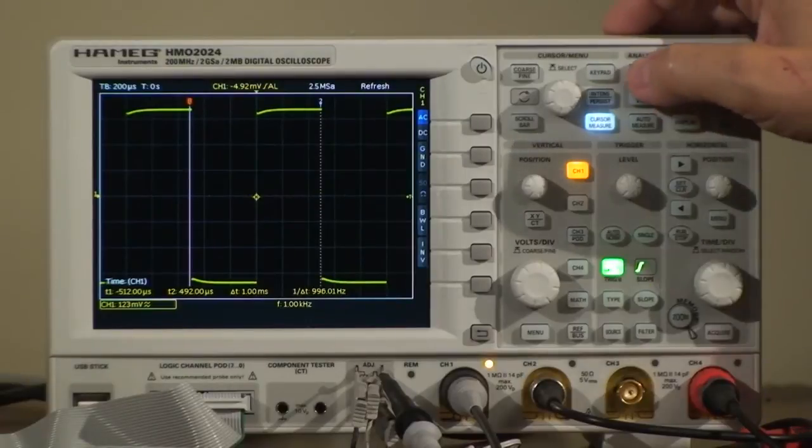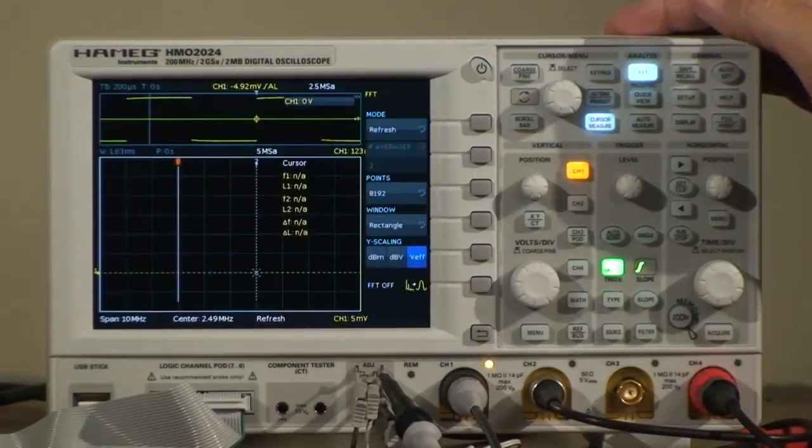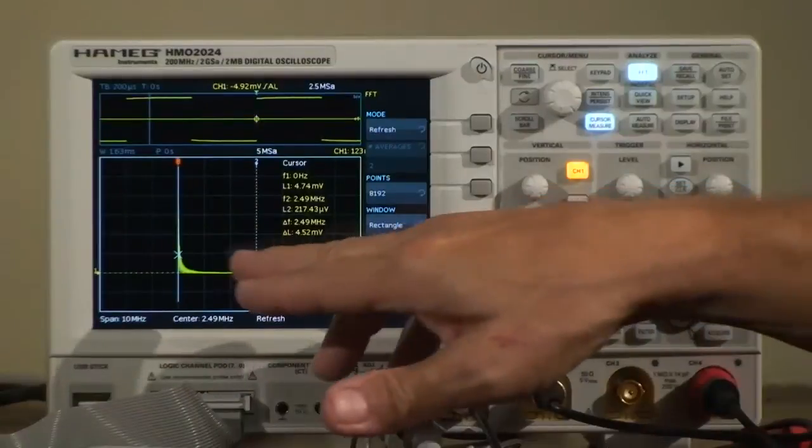We also have an FFT function under the analyzer function, which gives you a quick overview of the spectral components of the square wave.